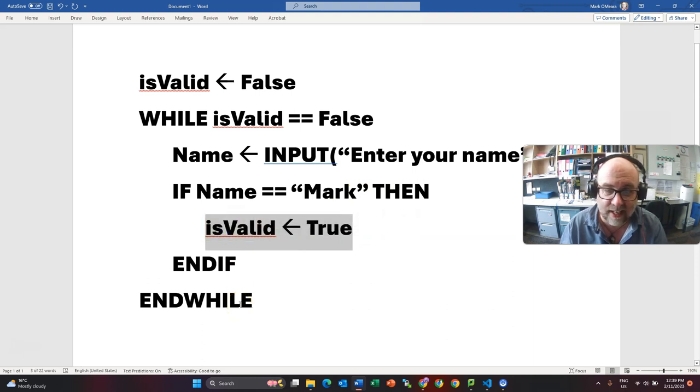We get to the end and say, well, is valid still false. Well, yeah, it is. So we go back into here. First line again. Enter your name. They enter some name that isn't Mark. Again, it doesn't pass this test. And so it doesn't run this line of code that changes the boolean.